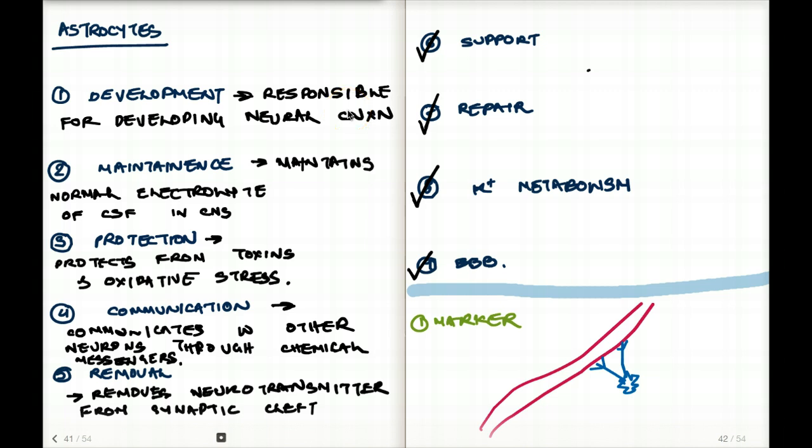So, what exactly is astrocytes? Astrocytes encompass all these qualities. Astrocytes can develop, can maintain, can protect, can communicate, can remove, can support, can repair. They're responsible for potassium metabolism, and they're also responsible for building the blood-brain barrier.